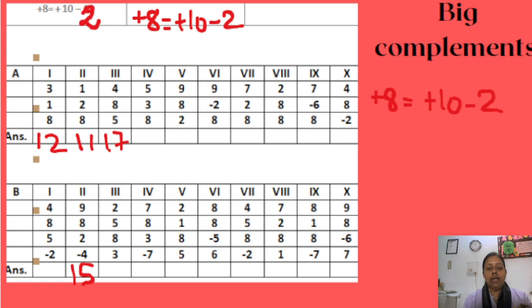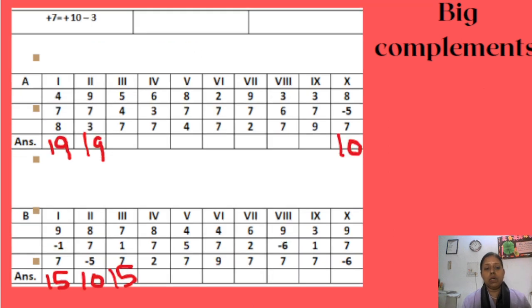Now let us move to the next worksheet. Plus 7. Plus 7 means 10 up, 3 down. The formula goes like this for all the plus big complements. For plus 7 we do plus 10 minus 3. 4 plus 7, 10 up, 3 down. Plus 8, 5, 6, 7, 8. So the answer is 19.